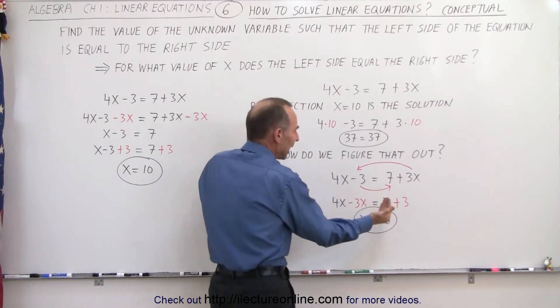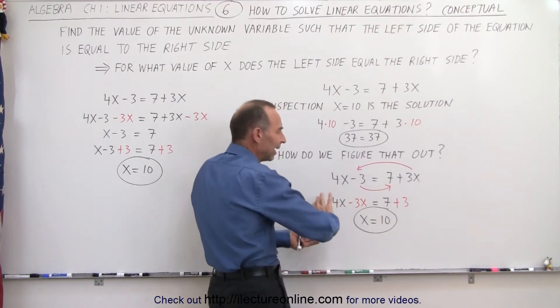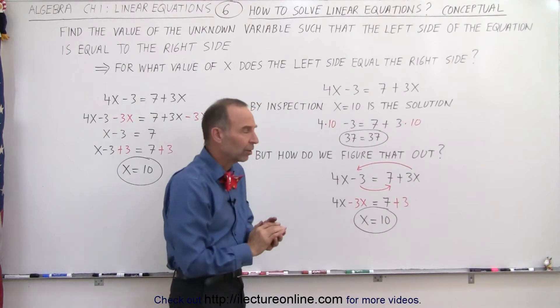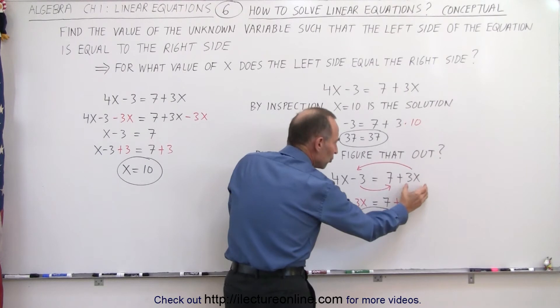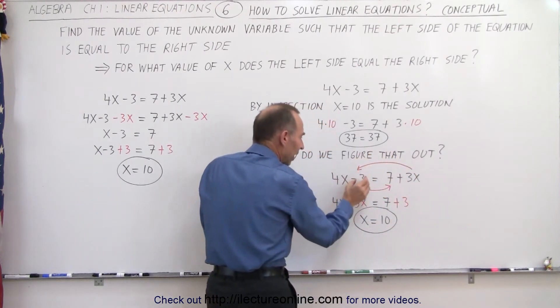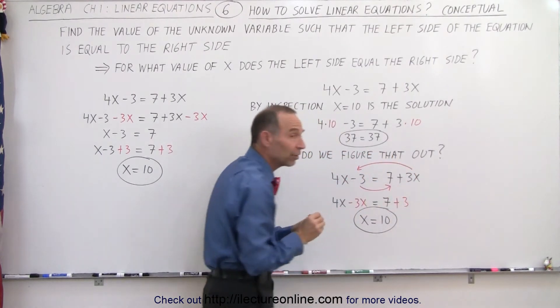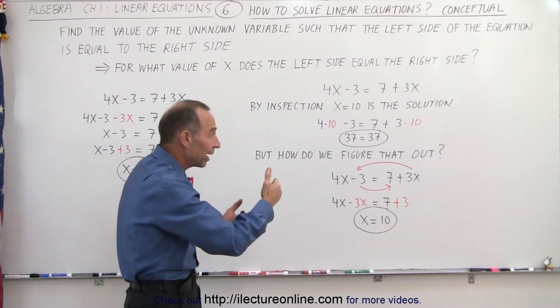Well, essentially, we want x on one side and the numbers on the other side. In other words, we have 4x minus 3 equals 7 plus 3x, so the goal is to move all the terms that have an x in them to one side and all the numbers to the other side. We learned that when we move things across the equal sign, the sign changes.